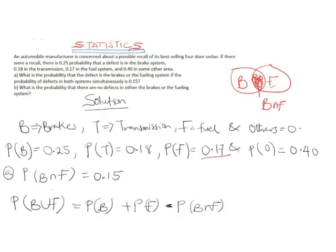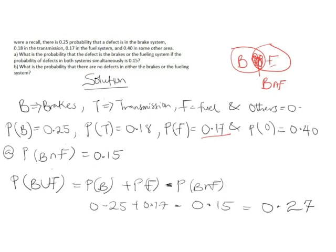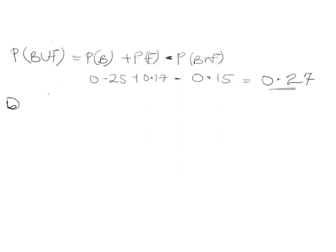Part (b) asks: what is the probability that there are no defects in either the brake or the fueling system? This is closely related to part (a). In part (a) we found that the probability of the defect being in the braking or fueling system is 0.27. Now we need the probability that it falls outside this range — in set notation, this is the complement of P(B ∪ F).